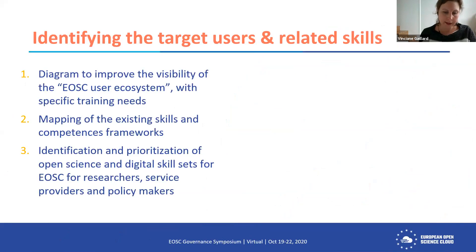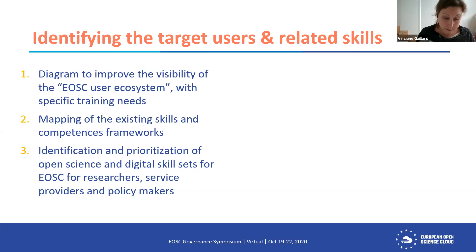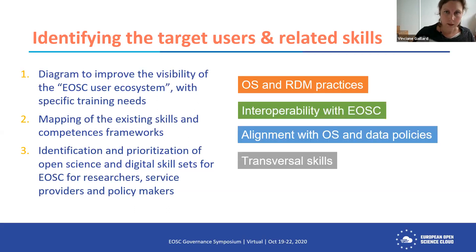My first step was to identify the target users within the EOSC ecosystem and then the related skills. A diagram has been conceptualized to improve the visibility of this EOSC user ecosystem, and then we are trying to map on the existing skills frameworks to identify what is the core — priority number one — within the remit of the minimal viable EOSC.